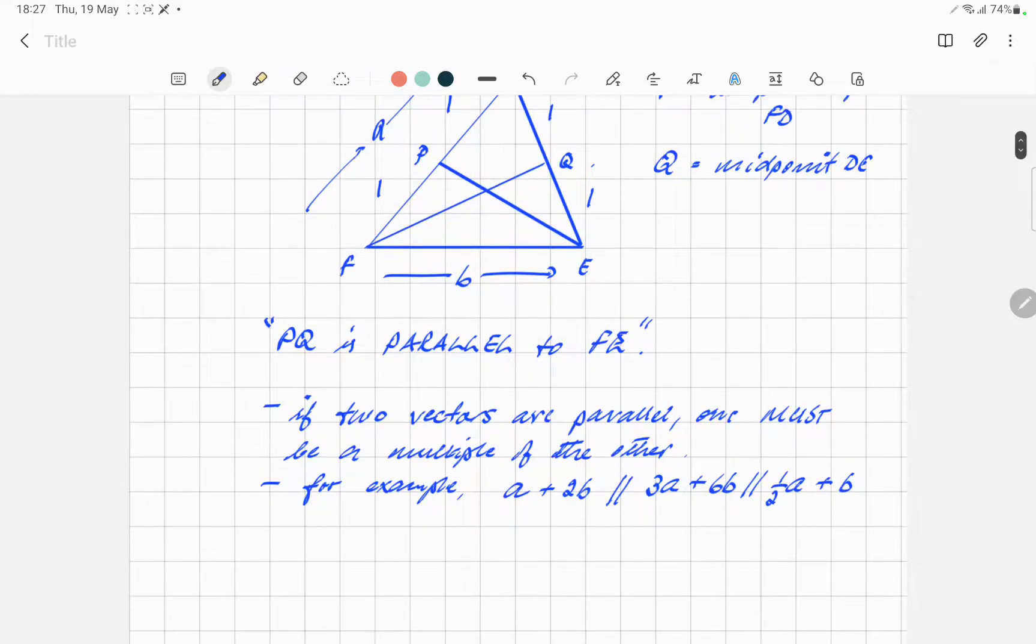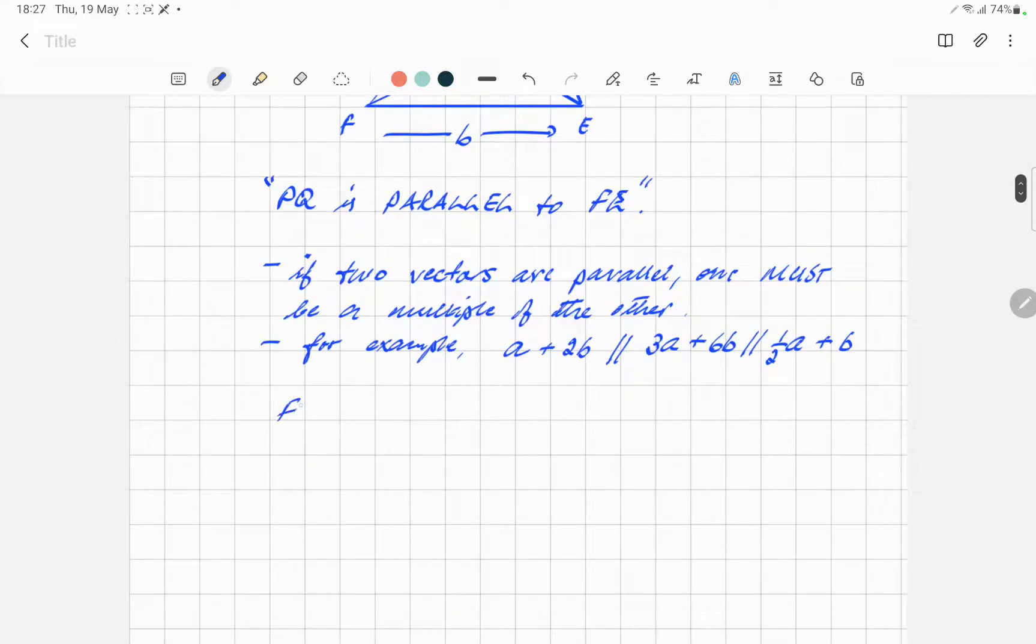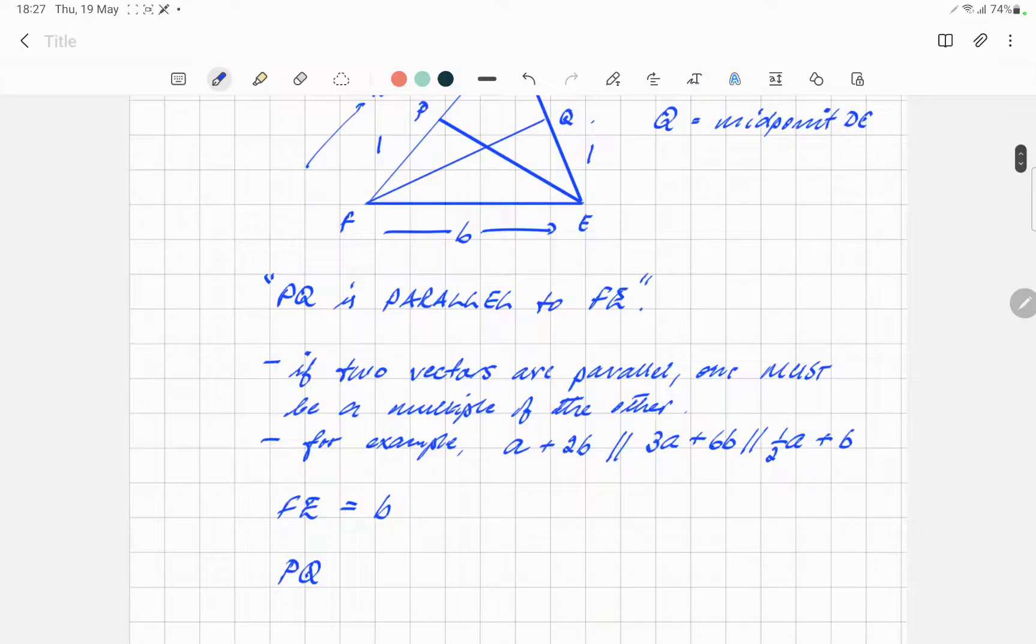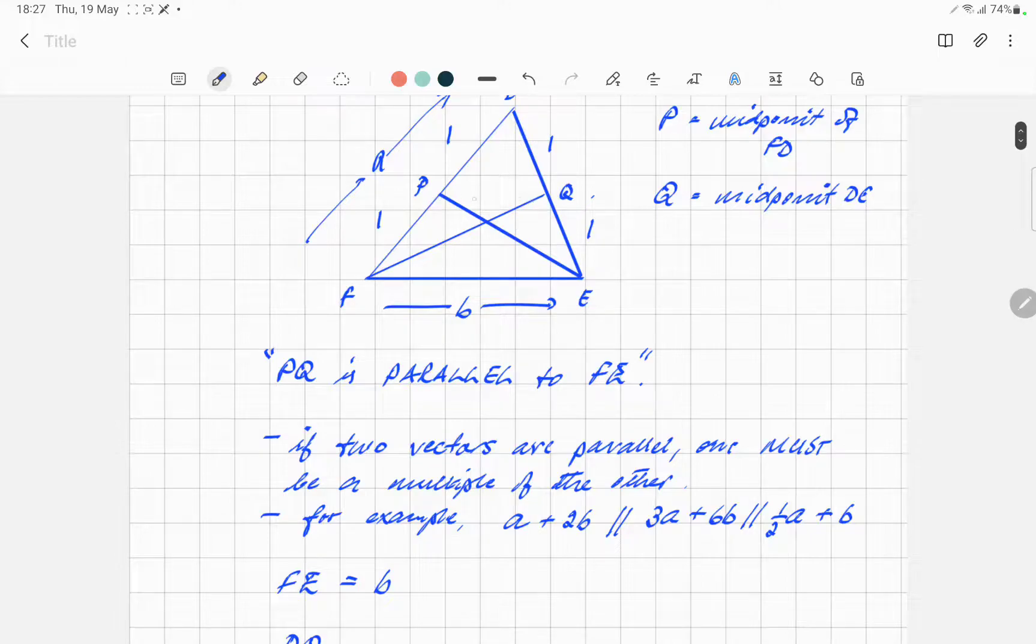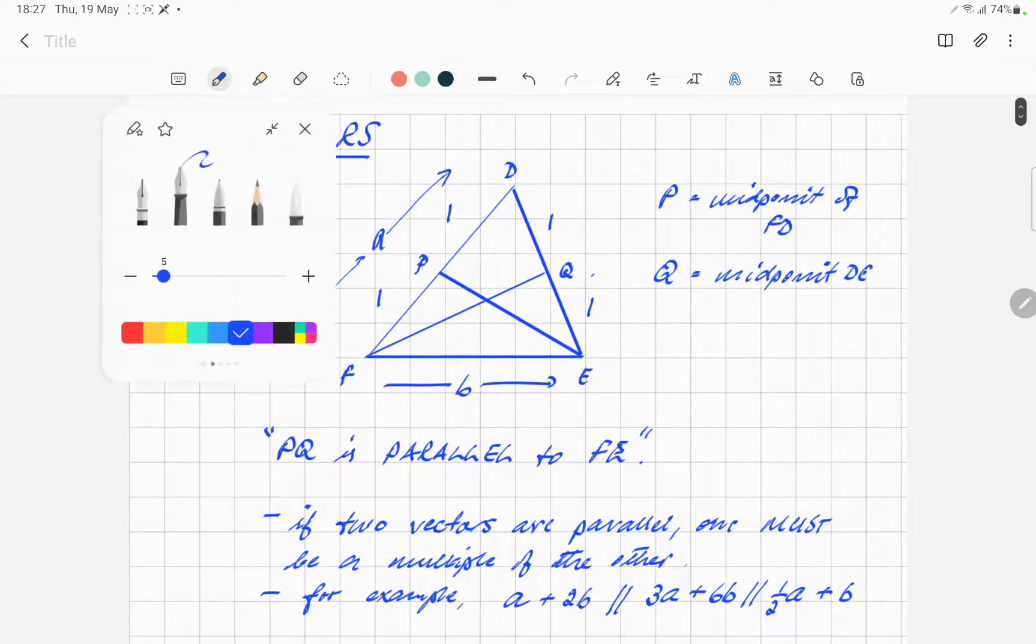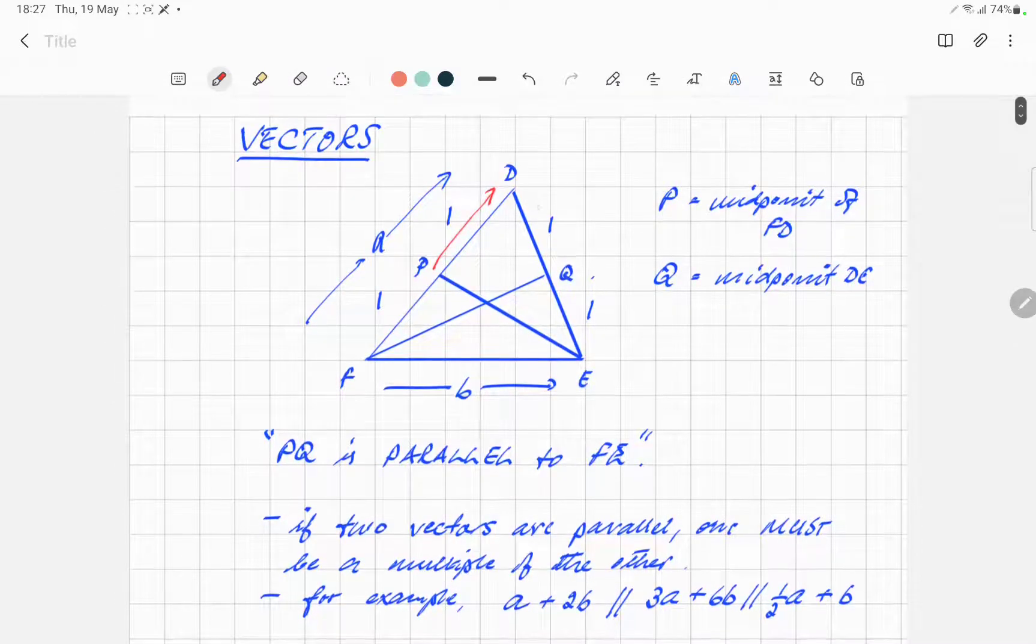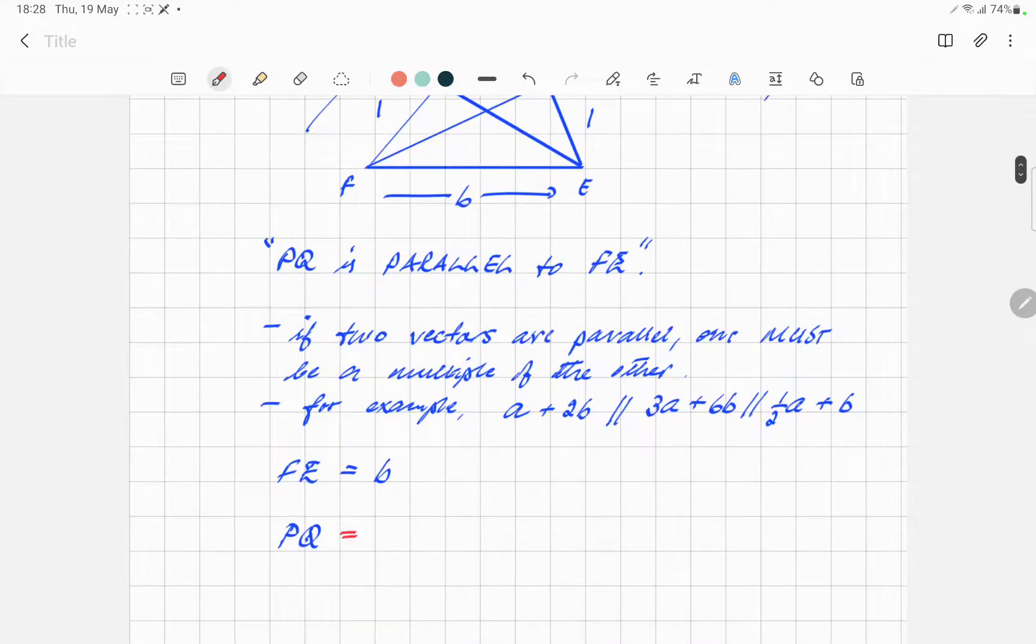Now we're going to go about proving that statement there. We know that FE is just the vector B. Now we want PQ. So P to Q. Look at this element here.